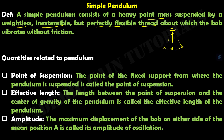What is effective length? The length between the point of suspension and the center of gravity of the pendulum bob is called the effective length of the pendulum. Suppose this is our point of suspension P, and this is our thread of length L. The center point of the spherical bob is where gravity acts, and the length from P to that center point is our effective length L.